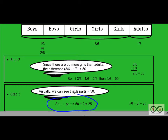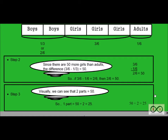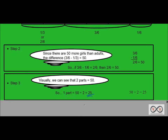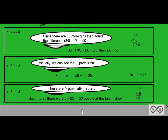Step three: one part equals 50 divided by 2. We've shown our work — 50 divided by 2 equals 25, so one part equals 25. Step four: since there are six parts altogether, six times 25 gives us our solution. Six times 25 equals 150 people altogether at the talent show.